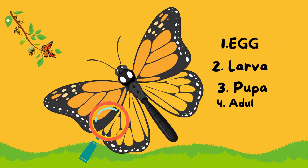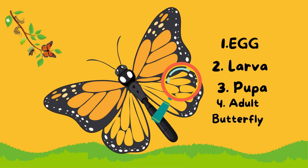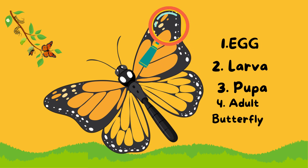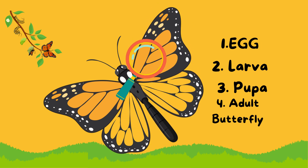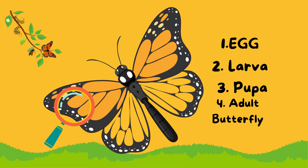Let's look at how a butterfly transforms. Stage 1: egg. Stage 2: larva. Stage 3: pupa. Stage 4: adult butterfly.